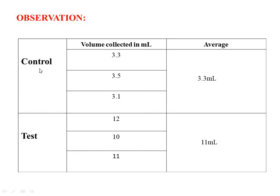For example, suppose that for the control group the three rats produced 3.3 ml, 3.5 ml, and 3.1 ml, giving an average of 3.3 ml. For the test group, the animals produced 12 ml, 10 ml, and 11 ml, giving an average of 11.11 ml.